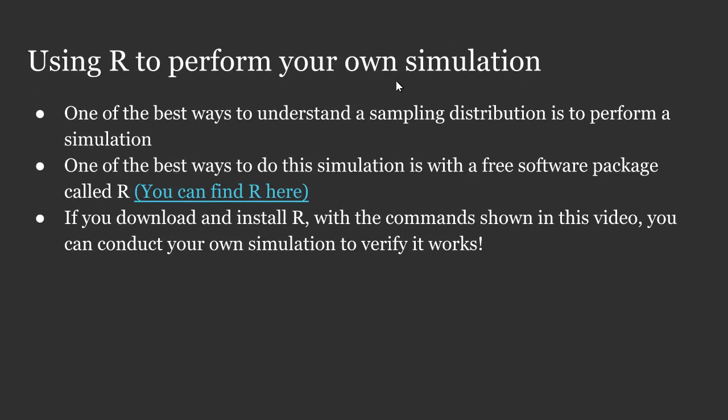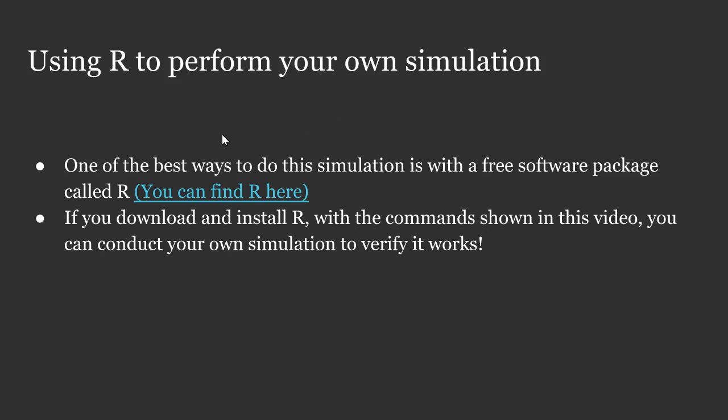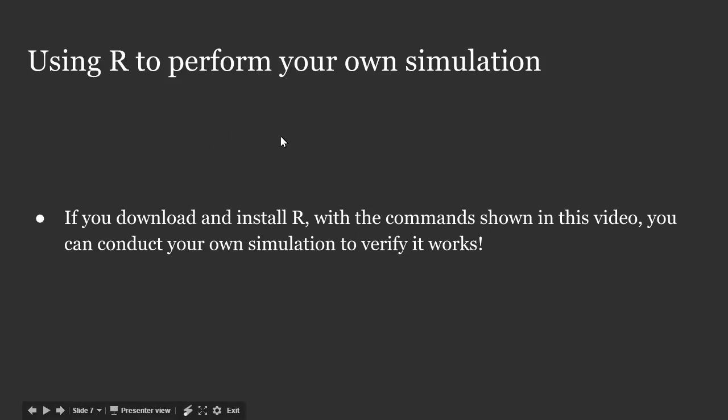What I'd like to do is help you better visualize exactly what a sampling distribution is. If you can visualize that, then you might believe more strongly in the central limit theorem that helps us understand the plus or minus in the polls. One of the best ways to understand a sampling distribution is to perform a simulation. One of the best ways to do a simulation is with a free software package called R. If you download and install R, with the commands shown in this video, you can conduct your own simulation — it'd be really nice if you had a way to verify on your own that what I'm saying is true and not just take my word for it.